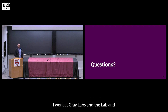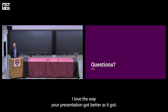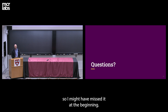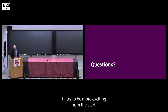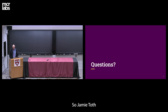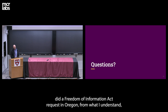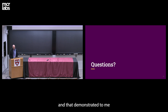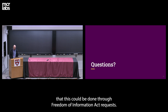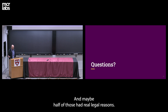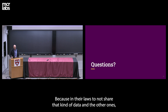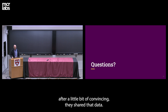Question from Matias at GRI Labs: if most states don't have an open data policy, how was the data compiled? Jamie Toth did a Freedom of Information Act request in Oregon, which demonstrated this could be done. So I sent FOIA requests to somewhere between one and two dozen states. Almost all said no right away — maybe half had real legal reasons why not, and the other half, after a little convincing, shared the data.